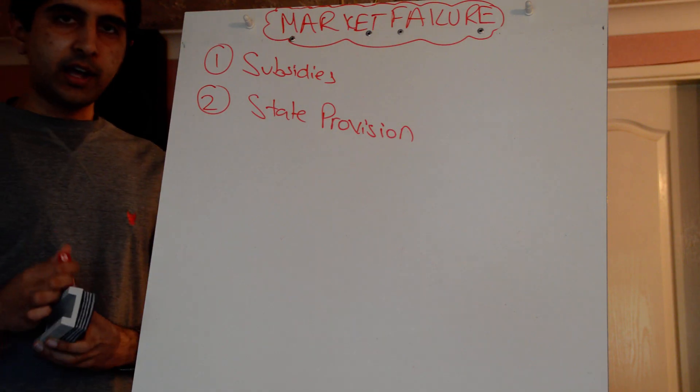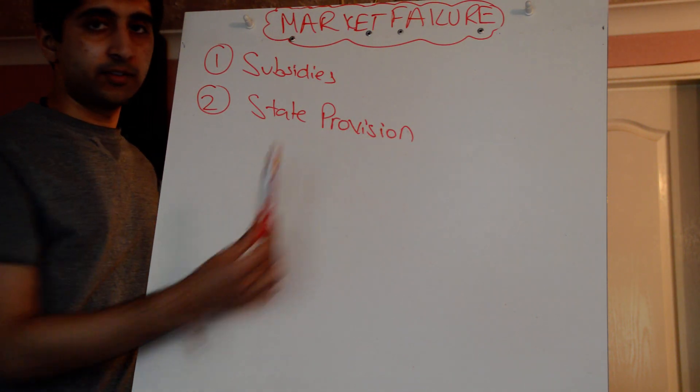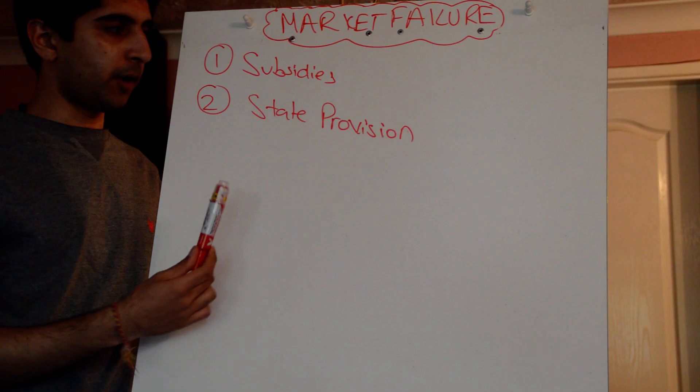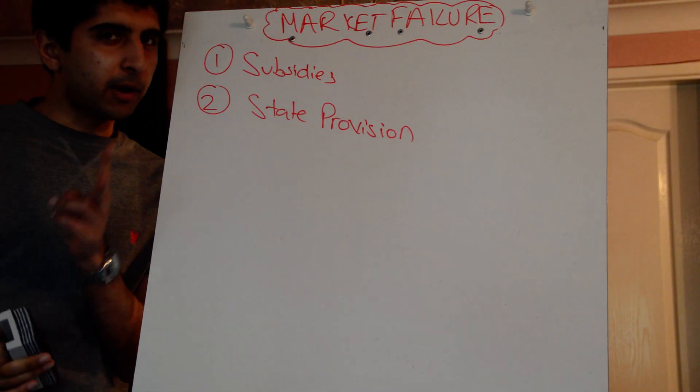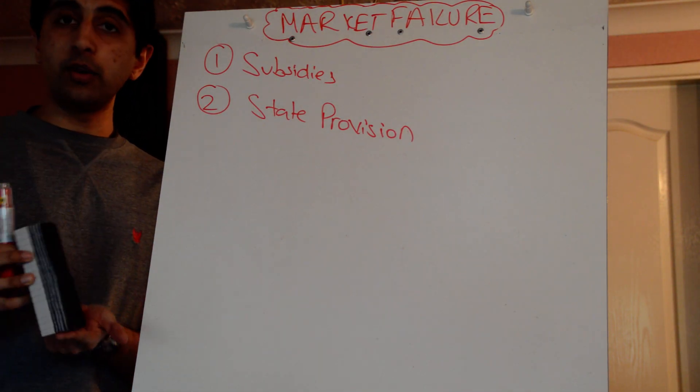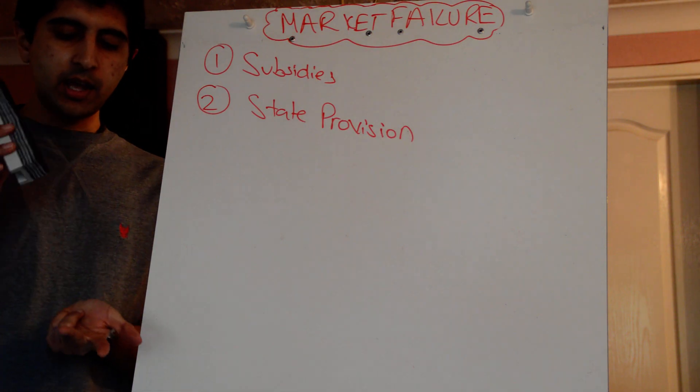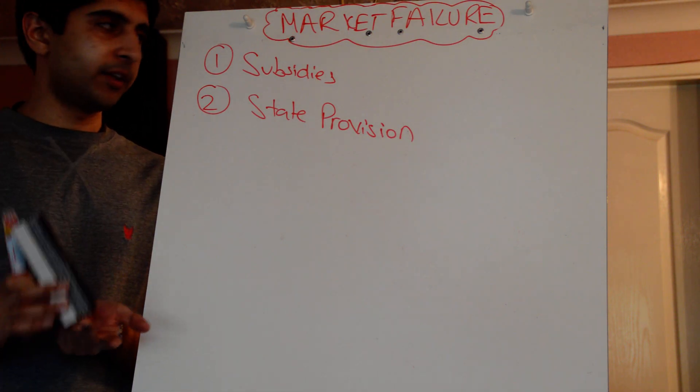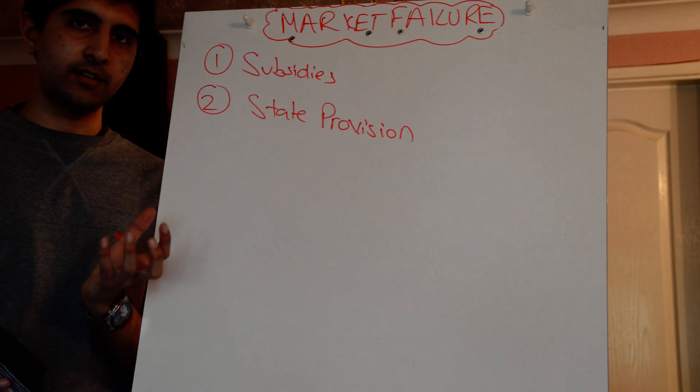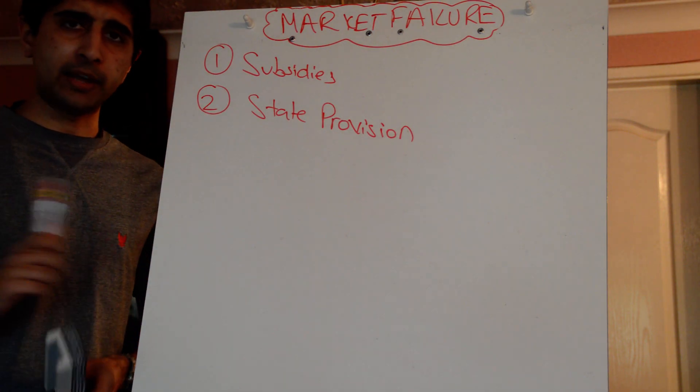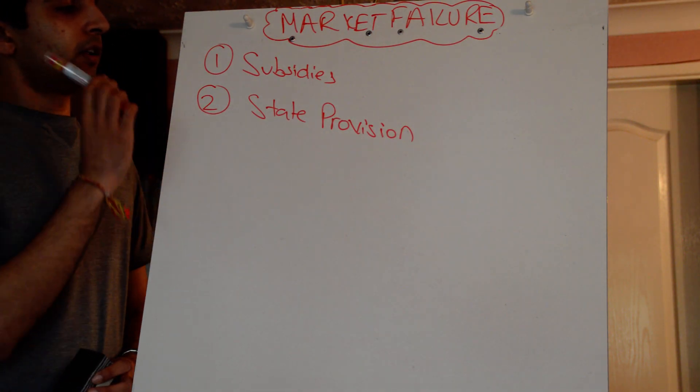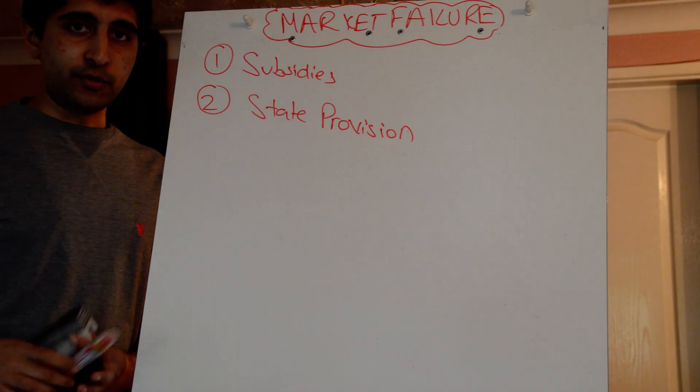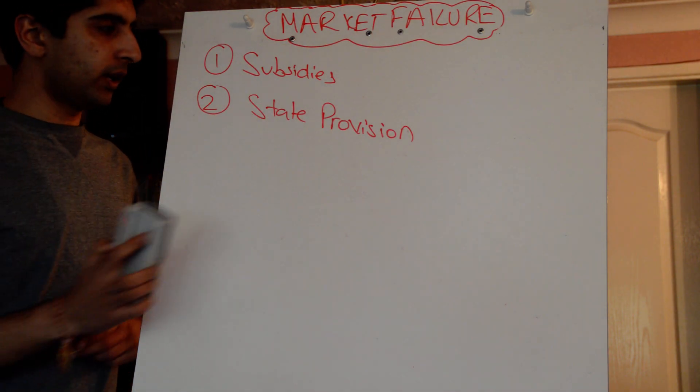Now, state provision, very simply, is when the state decides to provide all of these resources to a market. Bear in mind what the key merit goods are in society. One is education, and two is healthcare, because they have massive external benefits attached to them. We all know what those are from last year. So the government could decide to provide all these resources. And what happens when it does? Well, let's have a look.